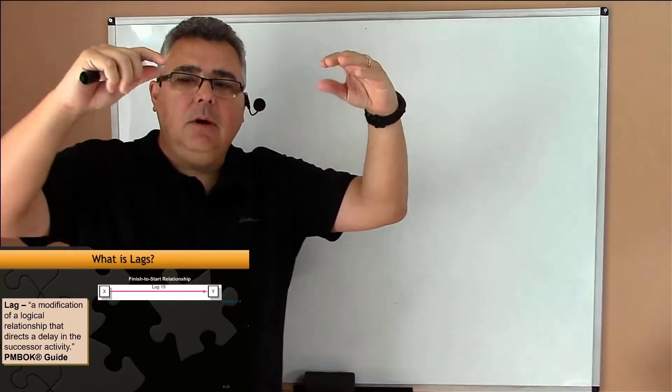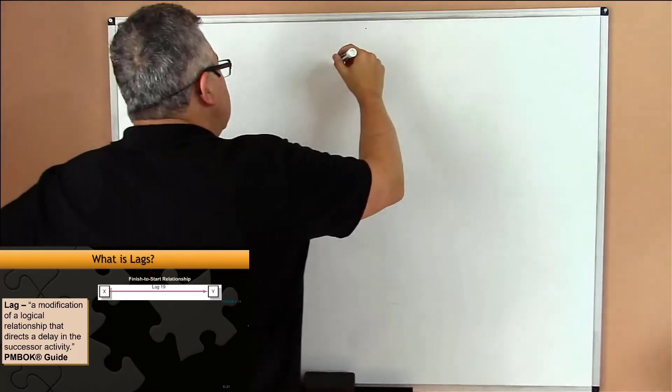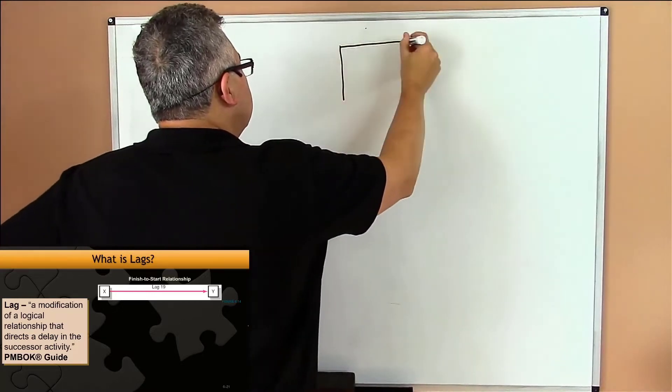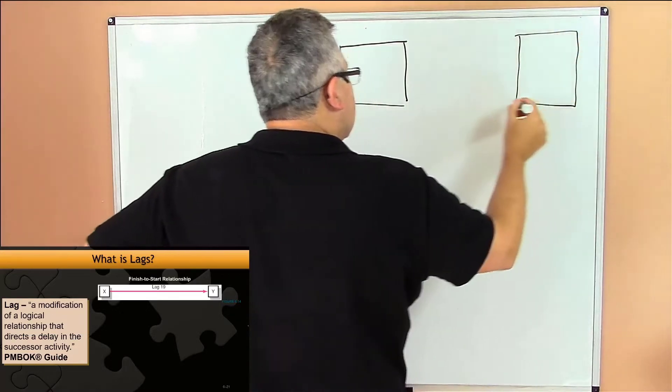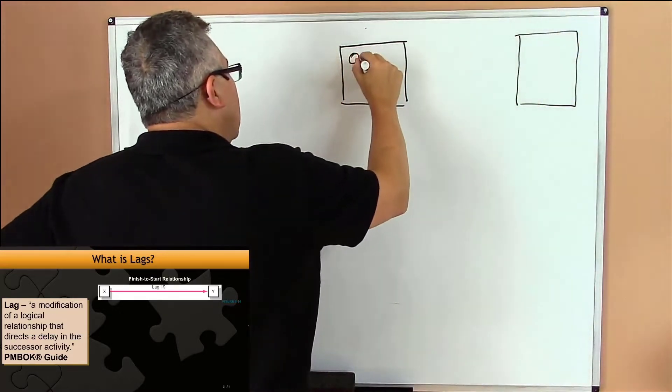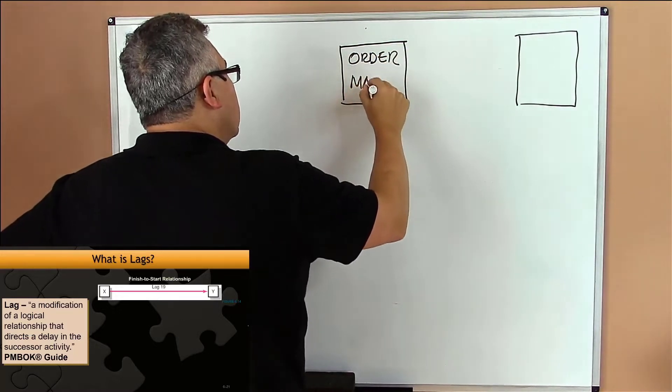I'm representing a section of a bigger project network in which I have two activities. Let's call that Order Materials - so you are ordering materials.